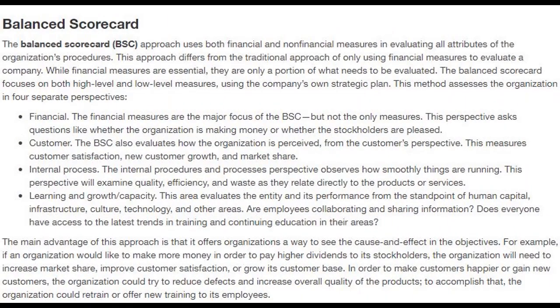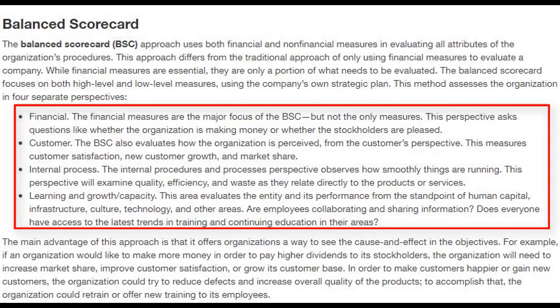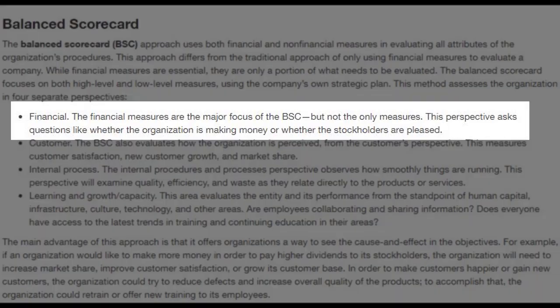If you go to chapter 1 and start reading the section immediately below figure 1.13, you will see less than a page dedicated to a concept known as the Balanced Scorecard. Essentially, the Balanced Scorecard comes down to four essential perspectives. The textbook lists them in the following order. The financial perspective: are you planning to make a certain amount of profit, cash flow, or other financial metric of success?